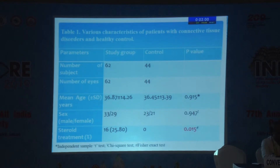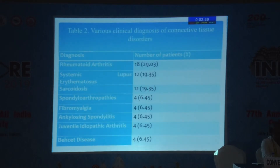Regarding results, significant values were seen only in the steroid treatment group in the study group, and there was no significant association in mean age or gender of the patients. The clinical diagnoses of connective tissue disorders included in our study showed that the majority were rheumatoid arthritis, followed by SLE and sarcoidosis, with the remaining diseases forming equal contributions.